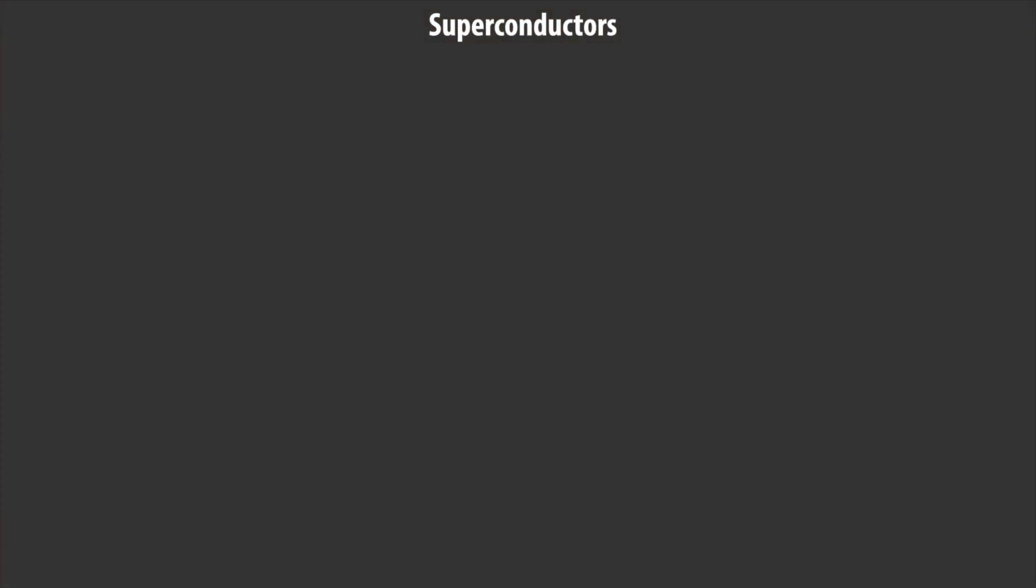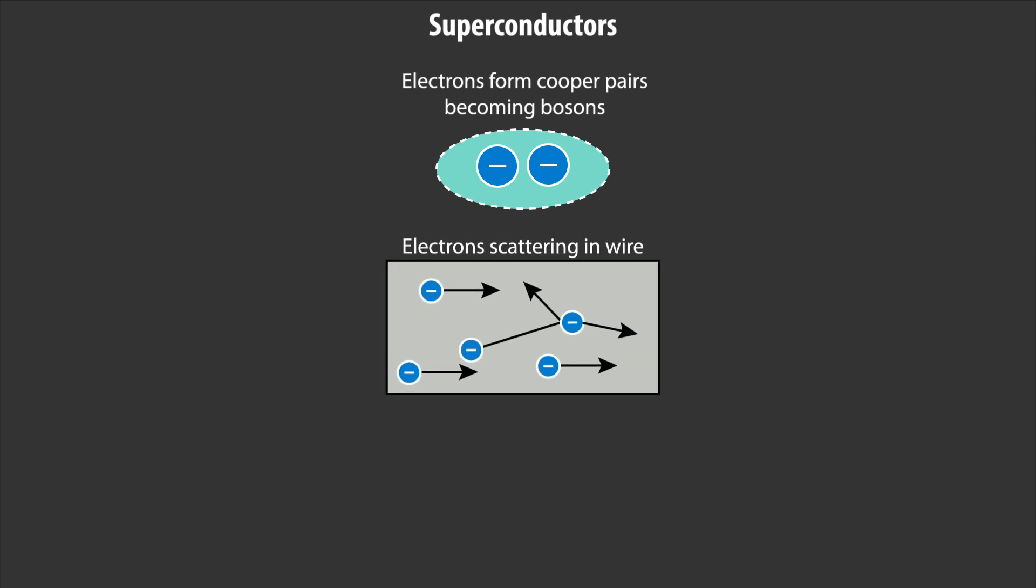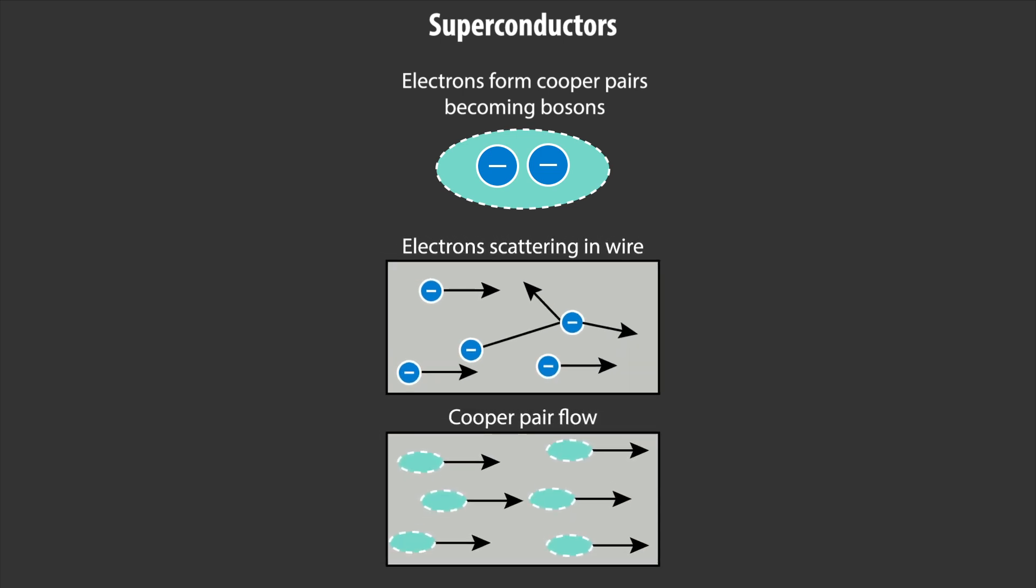A superconductor is a material that exhibits zero electrical resistance. This occurs due to the formation of Cooper pairs, which is when two electrons act as a single boson, effectively eliminating electron-electron interactions in the material. This means that there's no loss of energy from the flow of electrical current through the material.